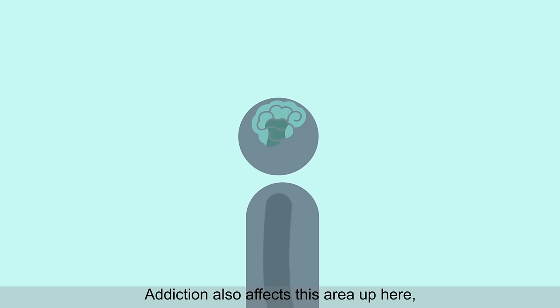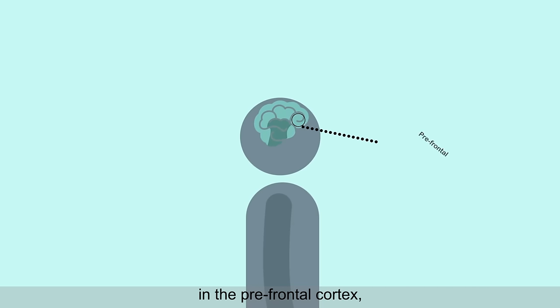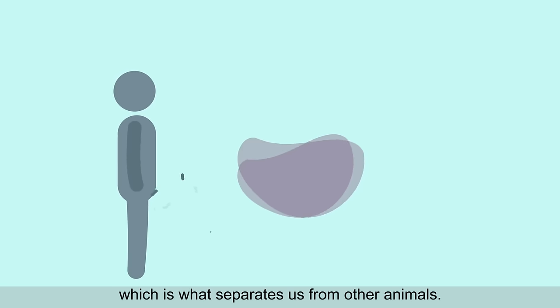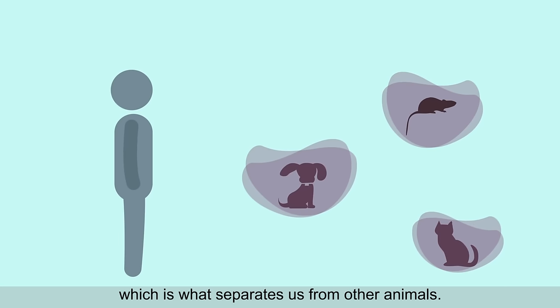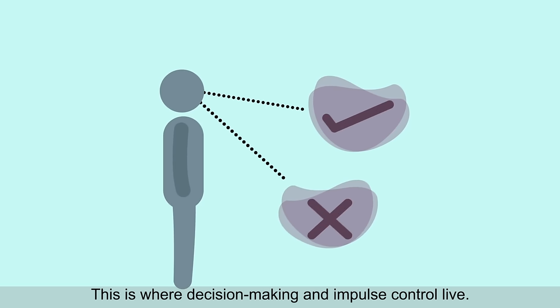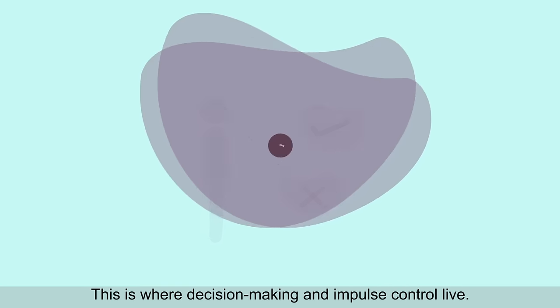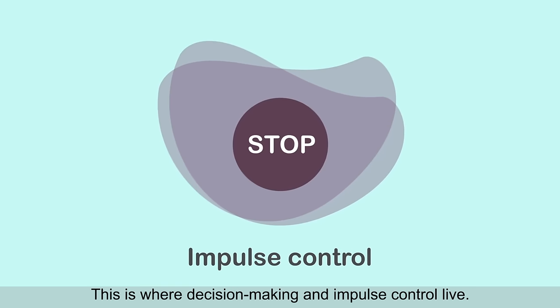Addiction also affects this area up here. That's the prefrontal cortex, which is what separates us from other animals. And this is where decision-making and impulse control live.